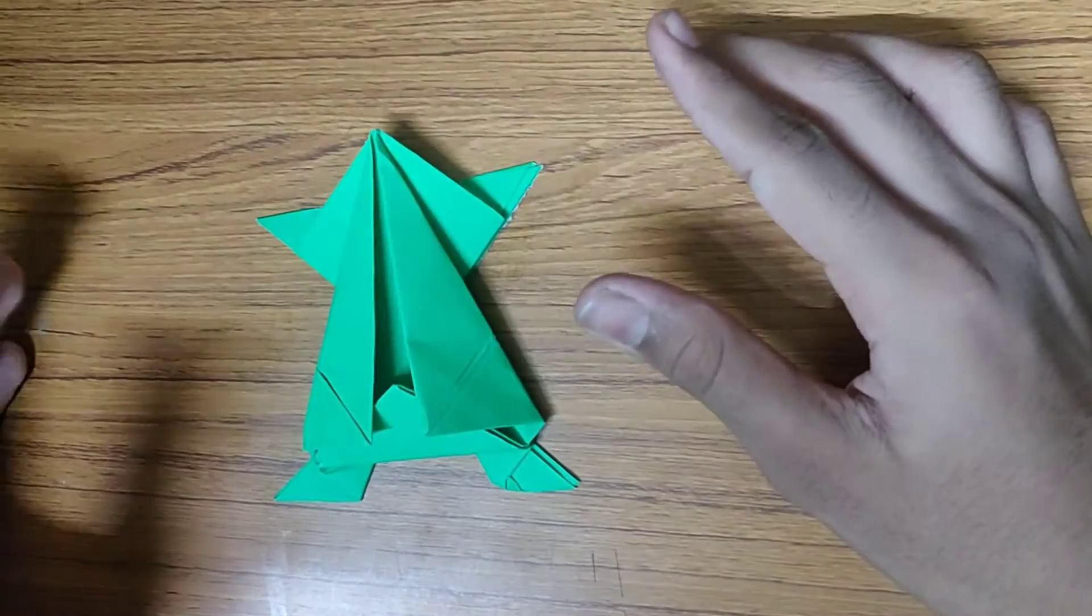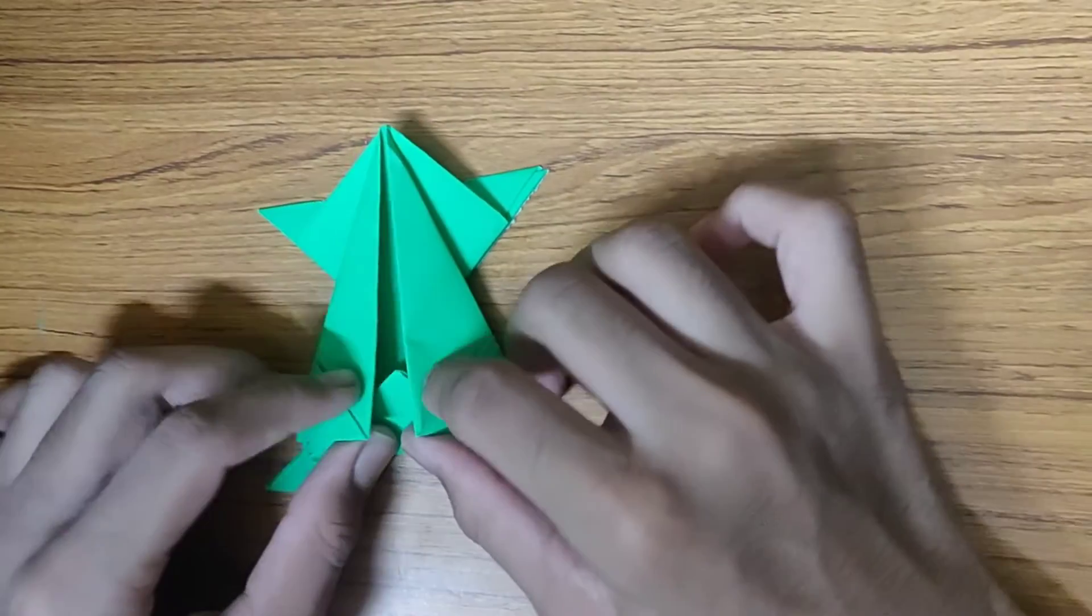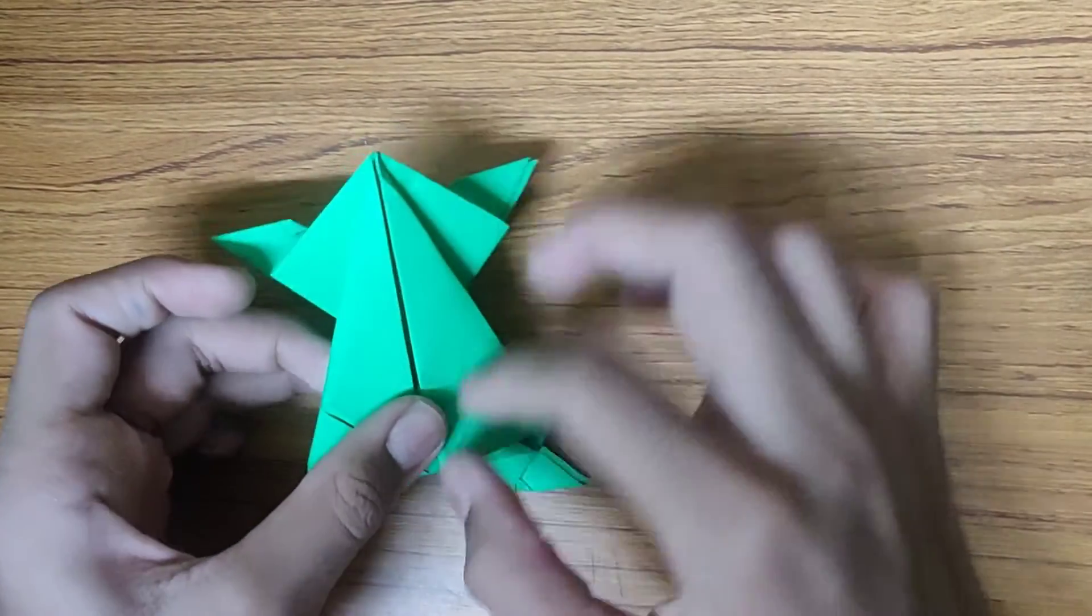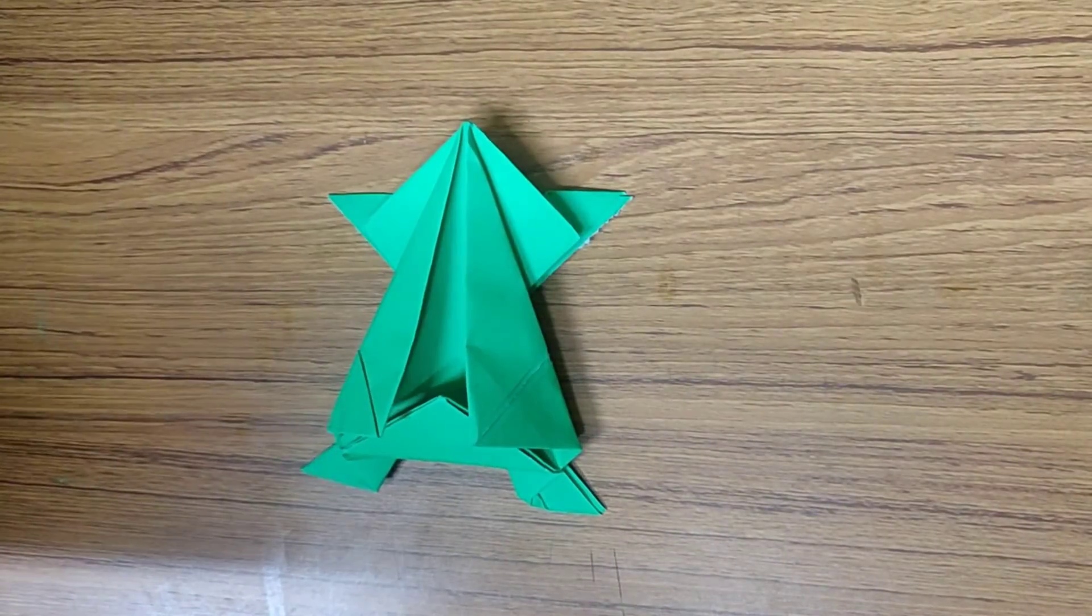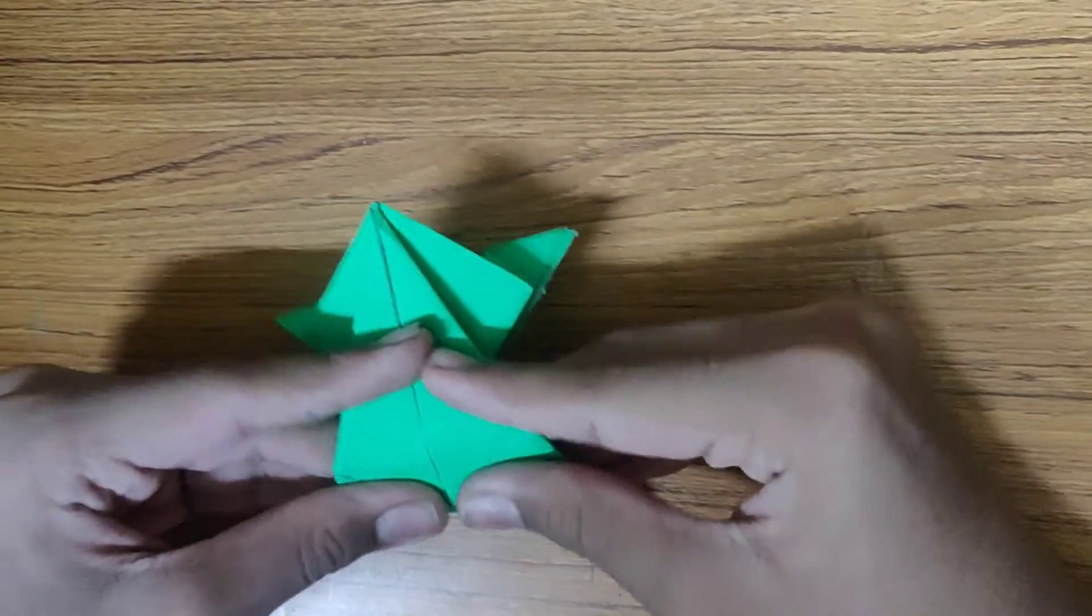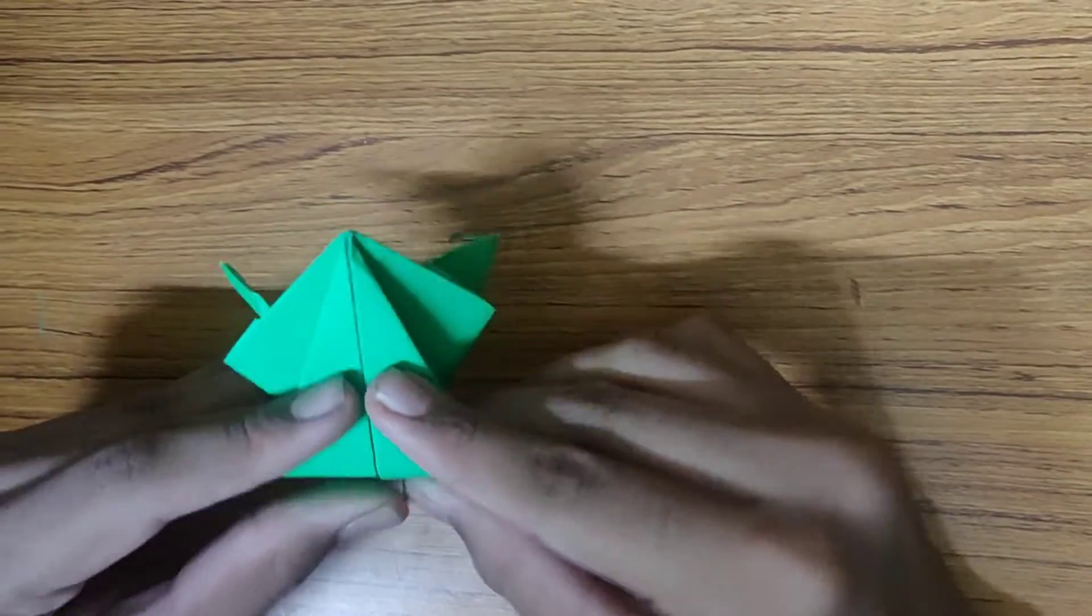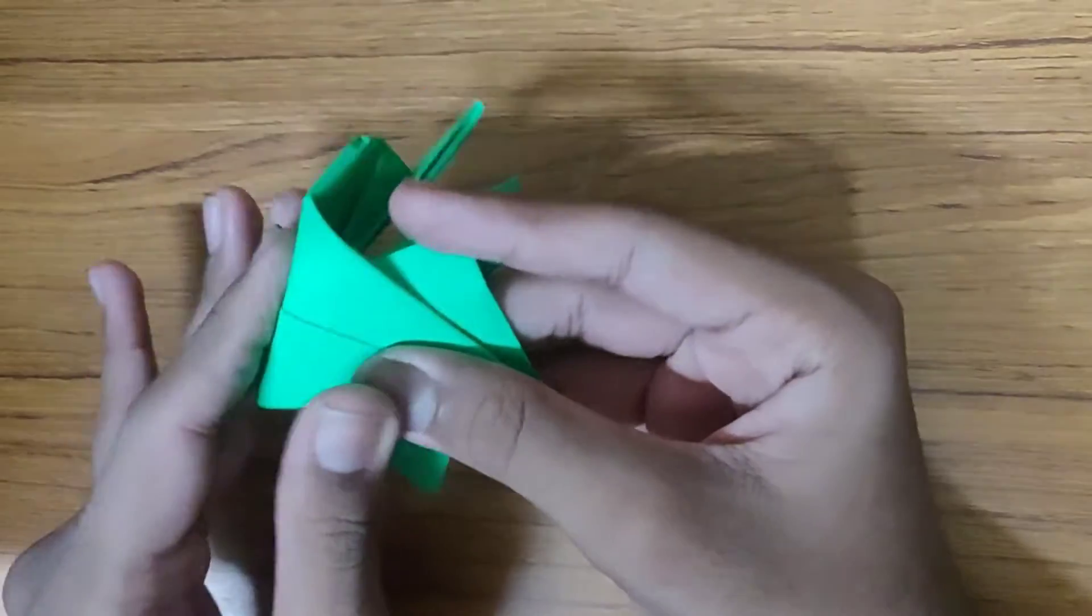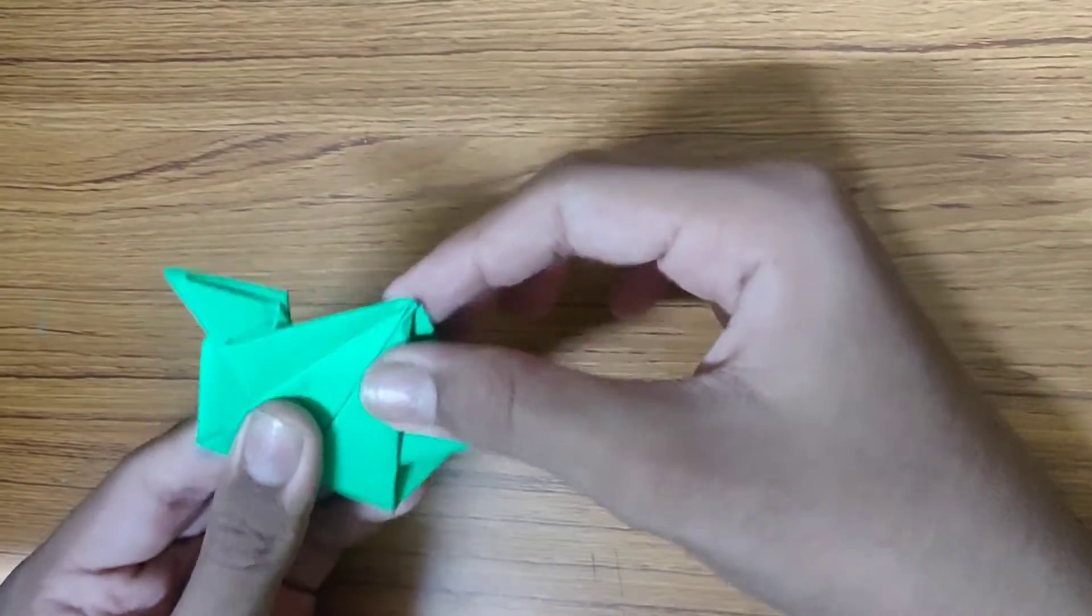So now this is a frog, and now it's time to make the jumping part, friends. We'll be making a mountain and a valley fold. First fold it like this.